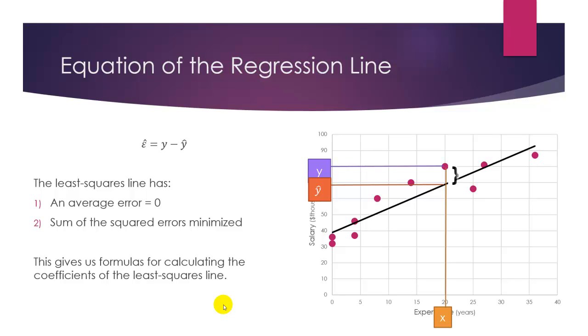These epsilon hat values are just the difference between the y and the y hat values. And the way this line of best fit is actually created mathematically is through calculus. They find what line, or how can we generate a formula to find this line where the average of these errors, average of these epsilon hats would be zero, and the sum of the squared epsilon hats would be as small as possible. So this gives us our formulas for calculating the coefficients, the y intercept and the slope of this straight line, and develops a technique called simple linear regression or the least squares method, which we'll present in the next video.